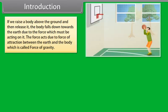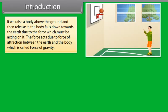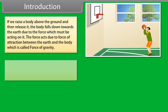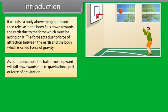Introduction: if we raise a body above the ground and then release it, the body falls down towards the earth due to the force acting on it. This force acts due to the force of attraction between the earth and the body, which is called the force of gravity. As per the example, a ball thrown upward will fall downwards due to gravitational pull or force of gravitation.